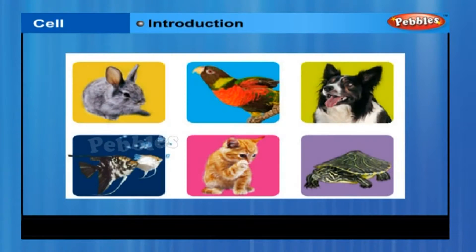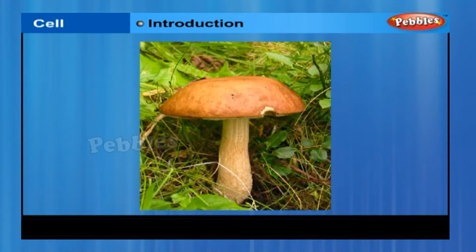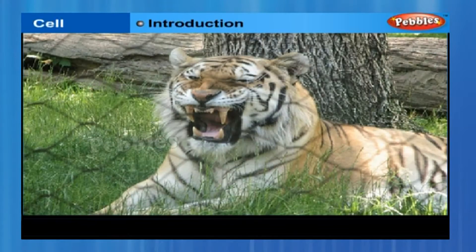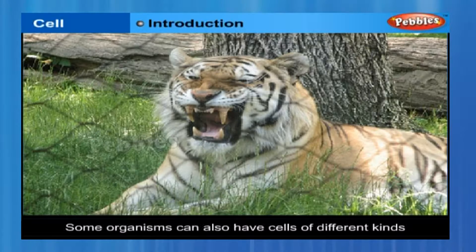Multi meaning many, such as some fungi, plants and animals. Every multicellular organism has come from a single cell. Some organisms can also have cells of different kinds.